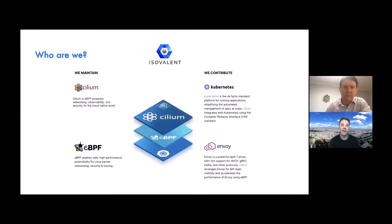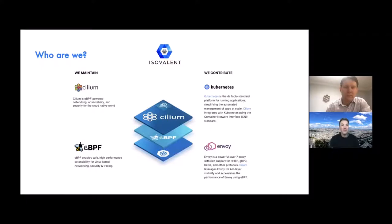We are a Silicon Valley venture-based startup. We're very much an open source company, and we maintain two really key open source projects, as well as contribute to a couple others. Isovalent is most often associated with our flagship open source project, Cilium. Cilium is an eBPF-powered networking, observability, and security technology built specifically for the cloud native world. eBPF has been described as giving Linux superpowers — it's a way to securely embed programs into the Linux kernel, incredibly useful for things like observability, tracing, networking, and security.